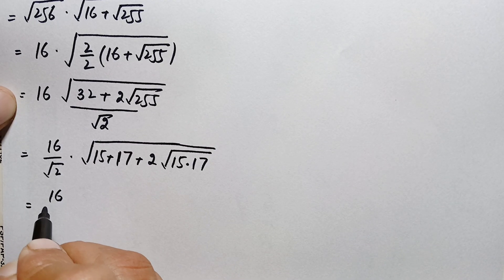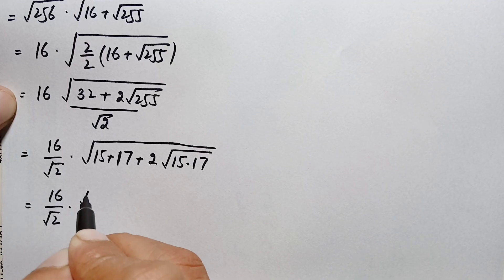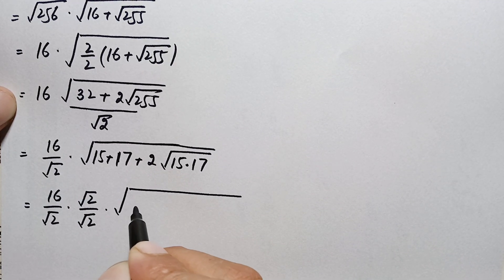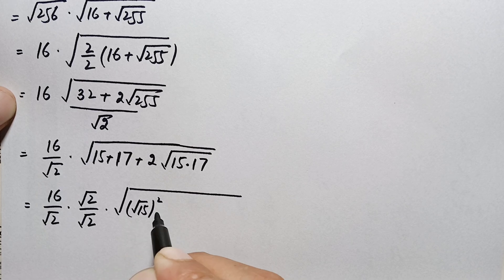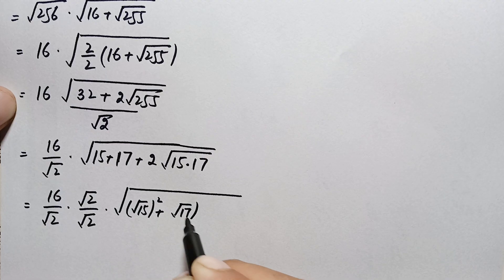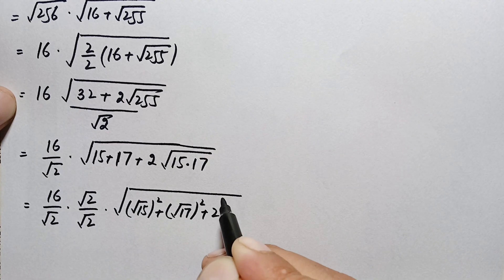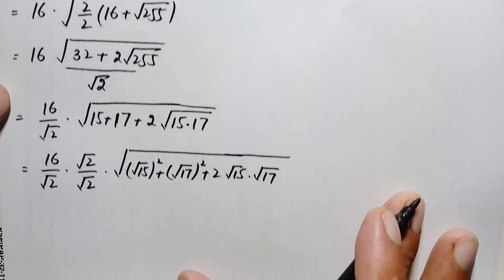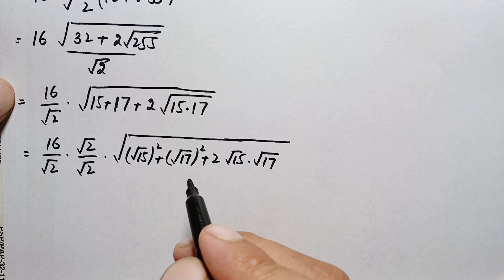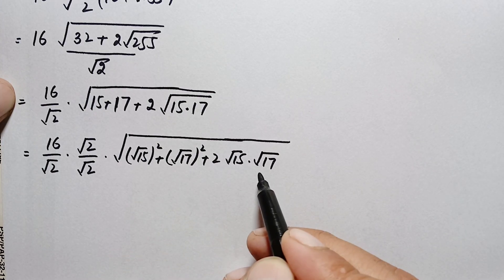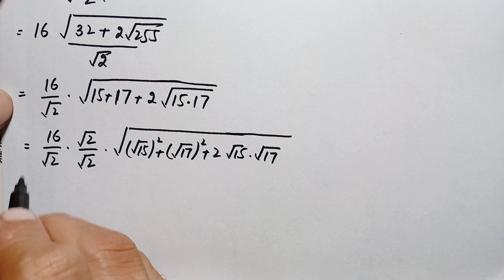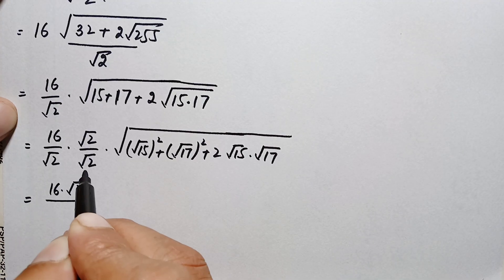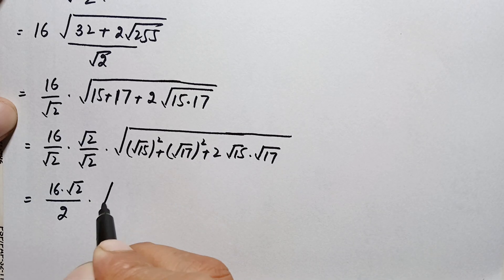Next we multiply and divide by square root of 2 with this number. We can write 15 as (square root of 15) squared, and 17 as (square root of 17) squared. This expression inside the square root matches the algebraic identity a squared plus b squared plus 2ab, which equals (a plus b) whole squared.